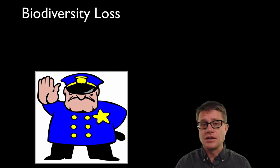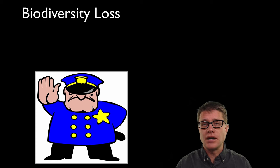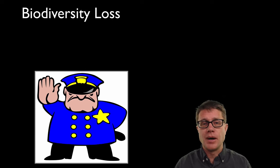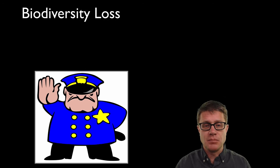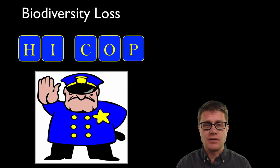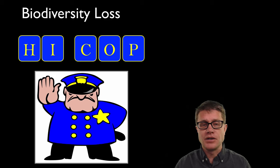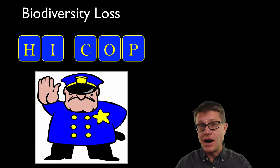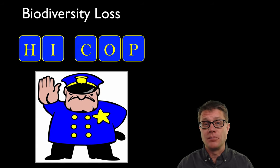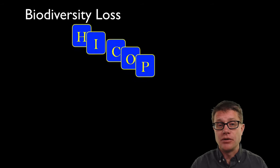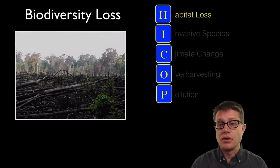So what is causing this biodiversity loss? When I was trying to come up with a quick way to remember these five things, I came up with this mnemonic. If you think of the biodiversity COP — think of HICOP as a way to remember it — if we put those in order: